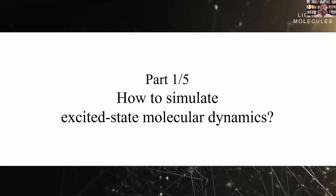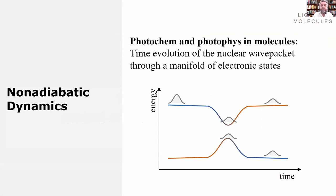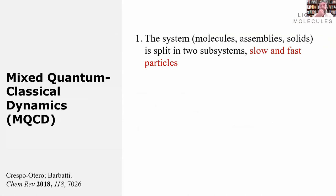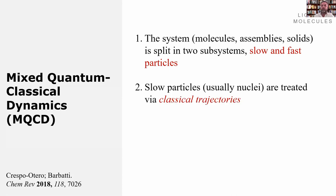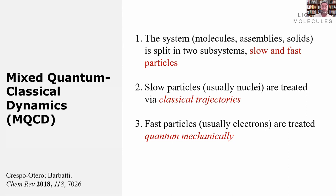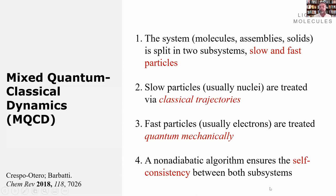Let's talk a little bit about how to simulate excited state dynamics. If we are looking at photochemistry and photophysics in molecules, we are looking at the time evolution of the nuclear wave packet through the manifold of electronic states. We do that via mixed quantum-classical dynamics, which means that we split the system in two subsystems with slow and fast particles. We treat the slow particles — usually the nuclei — via classical trajectories, and the fast particles, the electrons, are treated quantum mechanically. Then we use another algorithm to ensure self-consistency between the two subsystems.